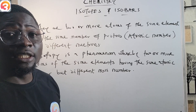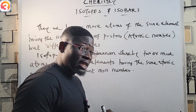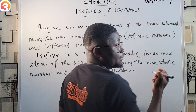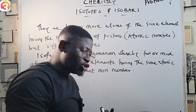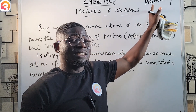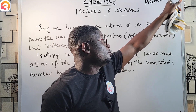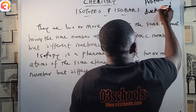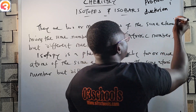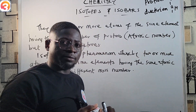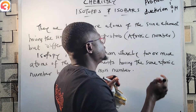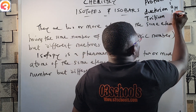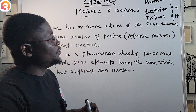A very good example is the isotopes of hydrogen. Hydrogen has three isotopes. Number one, we have protium — hydrogen with atomic number 1 and mass number 1. Then we have deuterium with mass number 2 and atomic number 1. Then we have tritium with mass number 3 and atomic number 1.